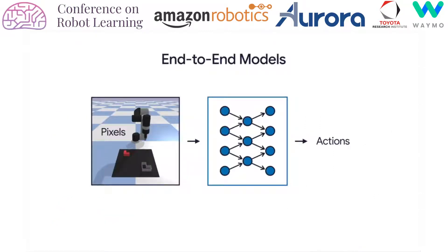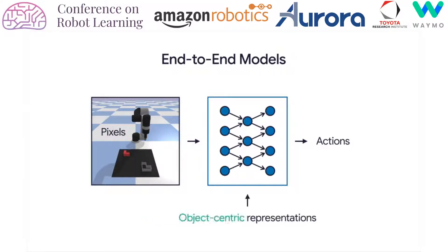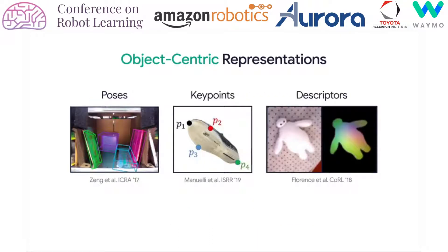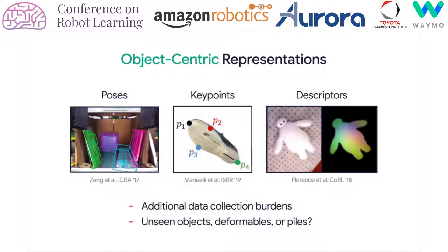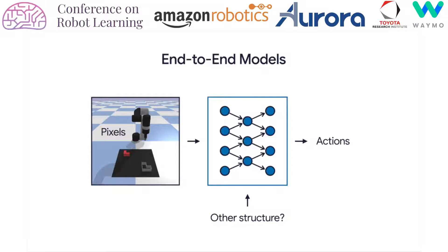End-to-end models that map directly from pixels to actions hold the capacity to learn complex manipulation skills, but are known to require massive amounts of data, making them hard to deploy in the real world since data collection is difficult to scale. While integrating object-centric representations such as poses, keypoints, or descriptors have shown to improve sample efficiency, these often impose additional data collection burdens and struggle to address unseen objects, highly deformable objects, or piles of stuff. Is there other structure we can incorporate into our end-to-end models to improve data efficiency without imposing the limitations of object-centric assumptions?